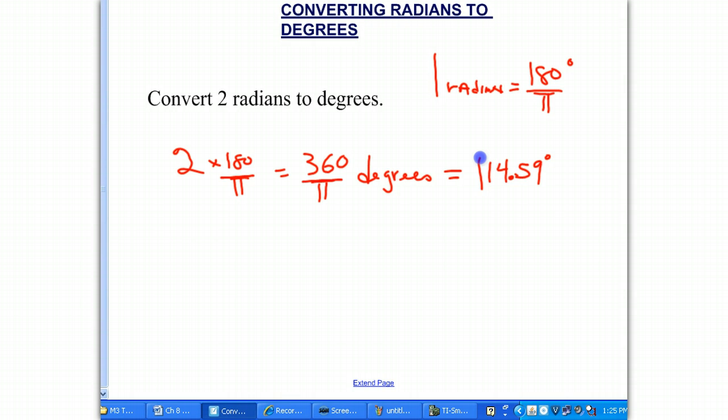And that's an approximate answer, not exactly, because we're dividing by π, and that has to be rounded off. So, 2 radians is approximately 114.59 degrees. And that would be our answer.